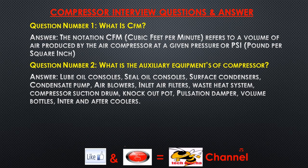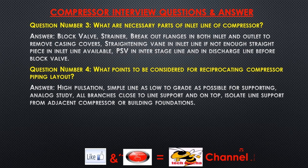Question number 3: What are the necessary parts of the inlet line of a compressor? Answer: Block valve, strainer, breakout flanges in both inlet and outlet to remove casing covers, straightening vane in inlet line if not enough straight piece in inlet line is available, PSV in interstage line and in discharge line before block valve.